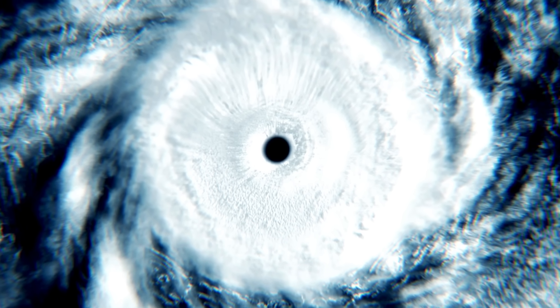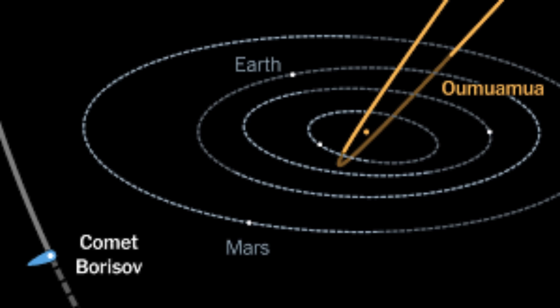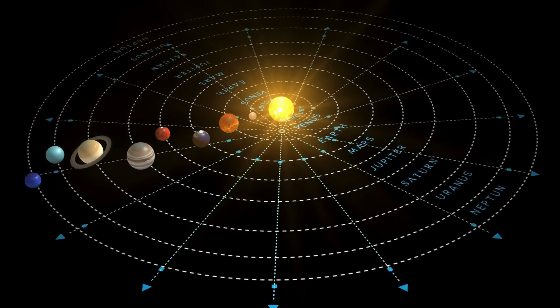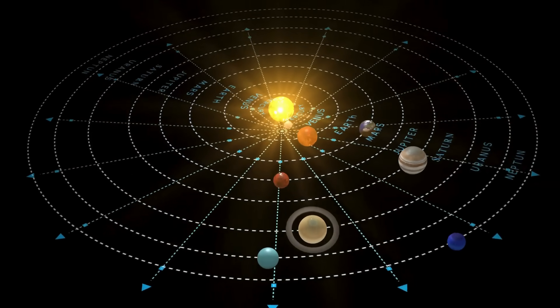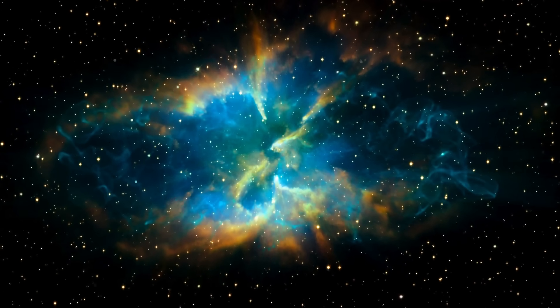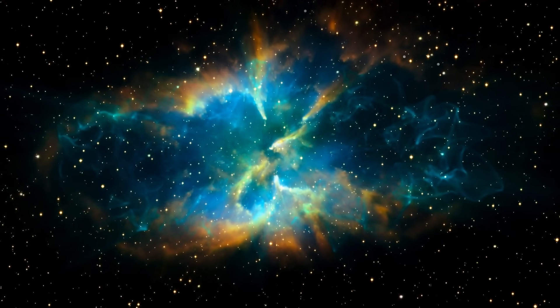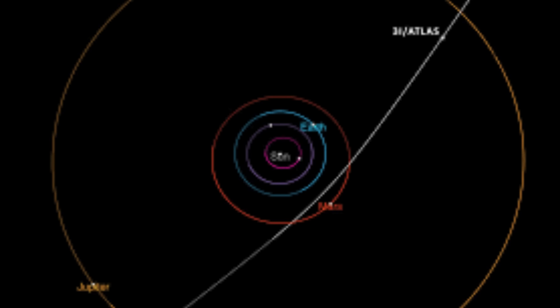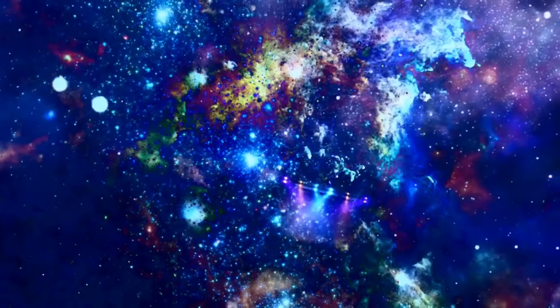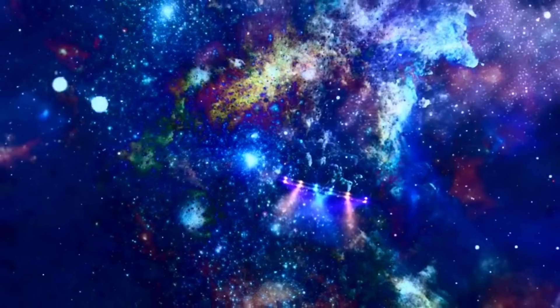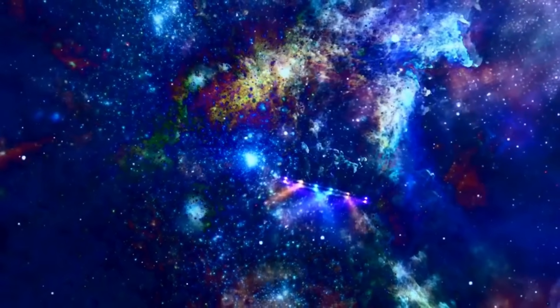Let's zoom out and consider the bigger picture. The discovery of 3I-Atlas following Oumuamua and 2I-Borisov suggests our solar system is a crossroads for interstellar travelers. Each visitor brings new questions about our place in the galaxy. If objects like 3I-Atlas are common, we may need to rethink how often stars eject material, or probes, into the void.